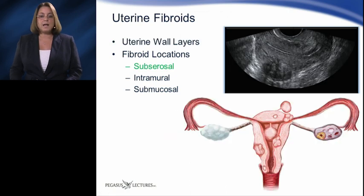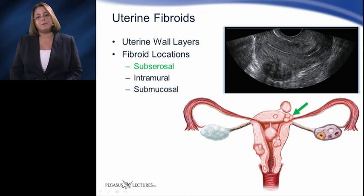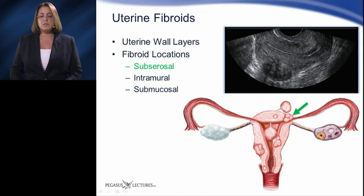The most common locations for uterine fibroids are subserosal, submucosal, and intramural. Subserosal fibroids develop on the outer surface of the uterus, just beneath the lining or serosa. As they grow larger, they can cause pain due to their size or pressure on nearby organs.